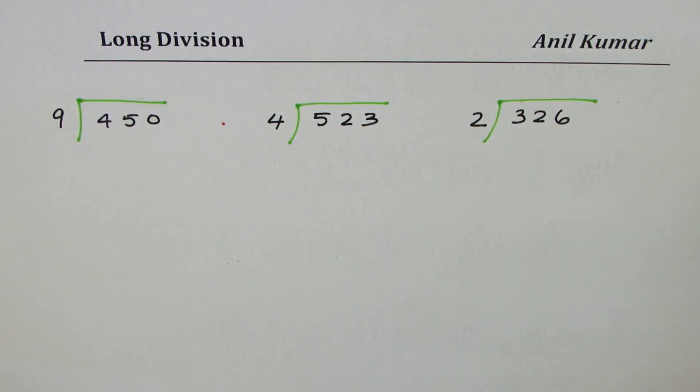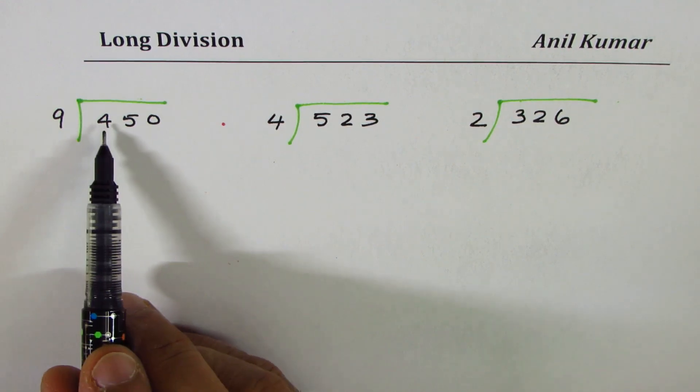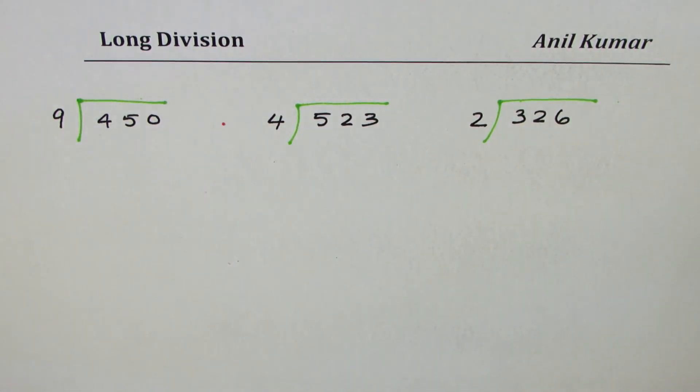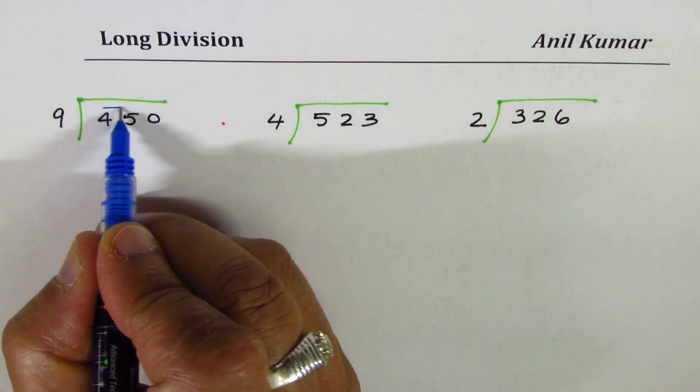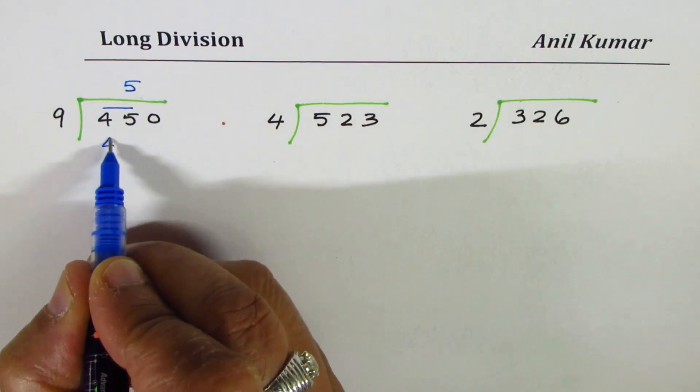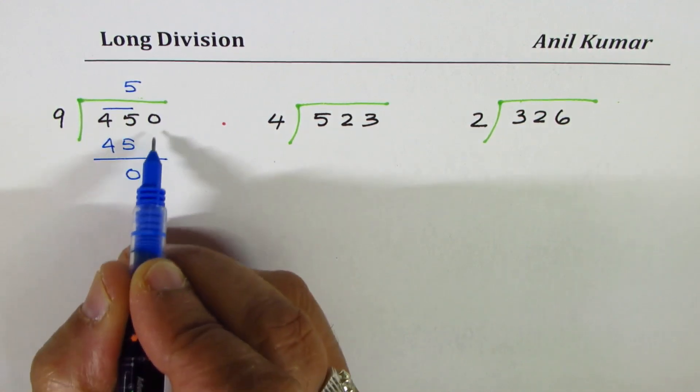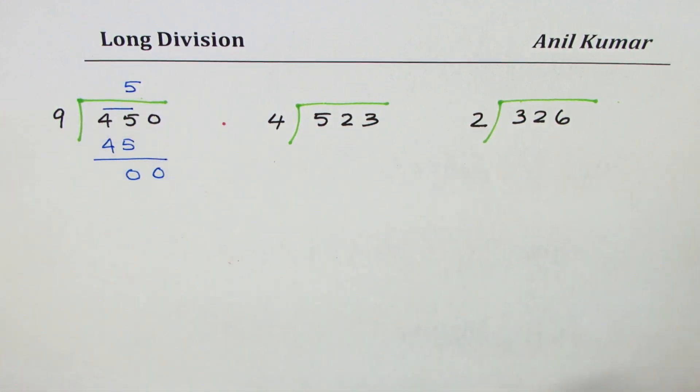Here are a few more. These examples may have some multiples. Let's see how to work with these examples. 450 is to be divided by 9. 4 is smaller than 9, so we'll take two numbers at a time. Let me take 45. 9 times 5 is 45. When you take away 45 from 45, you get 0. And then bring down the next 0.